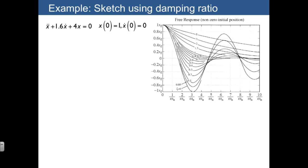And that's done most easily using the standard form of the characteristic equation, where we have s² + 2ζωn·s + ωn². This tells us that ωn has to be equal to 2. Then we need 2 times ζ times 2 is equal to 1.6, so that tells us that ζ has to be 0.4.